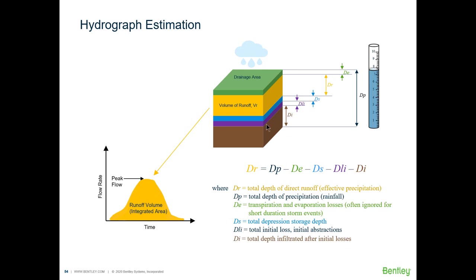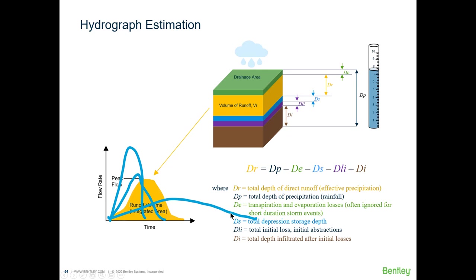If we were only looking at total depths and volumes, this would be enough. But when looking at variation over time, things get complicated. All the runoff methods we're about to explain begin with a known volume of runoff. The problem is that although the volume is known, what's unknown is how fast or slow the water leaves the catchment — in other words, the shape of the runoff hydrograph.